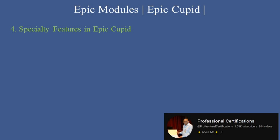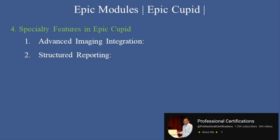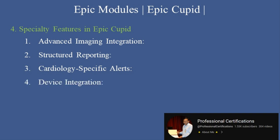Specialty features in Epic Cupid. Epic Cupid includes tools tailored specifically for cardiology. First, advanced imaging integration: supports cardiac imaging modalities like echocardiography, nuclear stress testing, and CT angiography. Second, structured reporting: offers standardized reporting for consistent documentation of findings. Third, cardiology-specific alerts: provides alerts for critical values, medication interactions, or clinical guideline deviations. Fourth, device integration: integrates with pacemaker and defibrillator management systems. Fifth, analytics and dashboards: tracks cardiology-specific metrics like procedure volumes and outcomes.